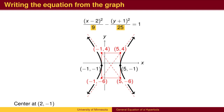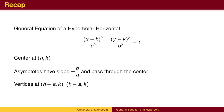To recap: if the x-squared term is positive, the vertices will be on the x-axis, a distance of a to the left and right of center. The asymptotes are drawn diagonally through a box whose corners are a distance of a left and right of center, and a distance of b above and below. If the y-squared term is positive, we follow the same procedure, except the hyperbola goes up and down instead of left and right. The vertices are a distance of b above and below the center.